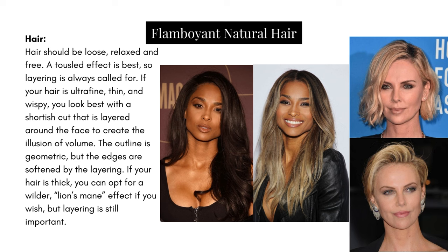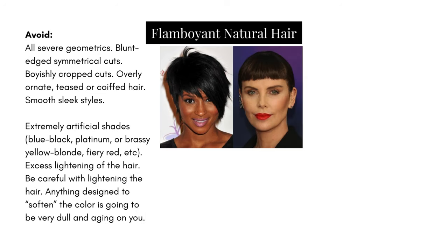For shorter hairstyles, Charlize is a great example — styled asymmetrically, moving away from anything symmetrical which doesn't work for this type. A side part will always be better than a middle part. She's added layering and a bit of curl for volume, nothing ornate. Avoid all severe geometrics, blunt-edge symmetrical cuts — Sierra's look here is too jagged in the edges, too sharp and stark against her. Charlize's blunt bang is not her greatest either — this kind of cut feels too blunt on her.